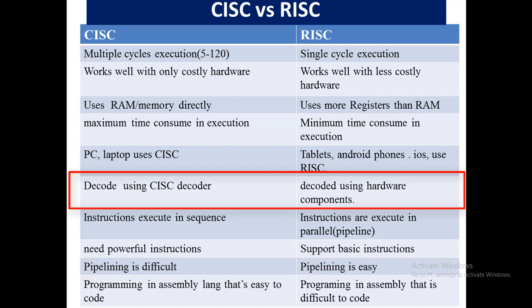In CISC, a CISC decoder is used to decode instructions from low level to high level languages. While on the other hand in RISC, hardware components are used to decode the instructions written in assembly language into high level language.